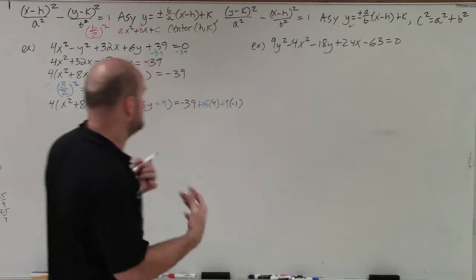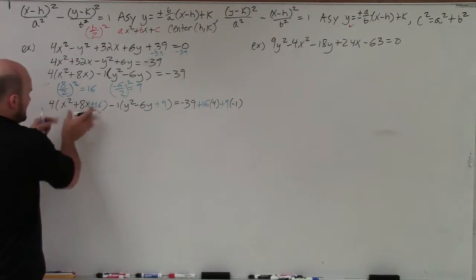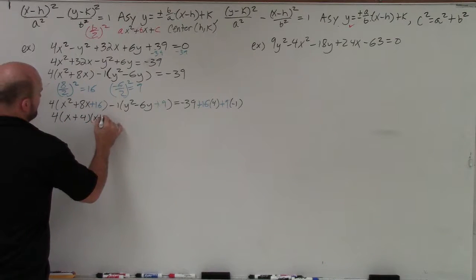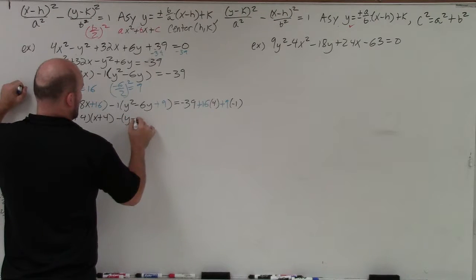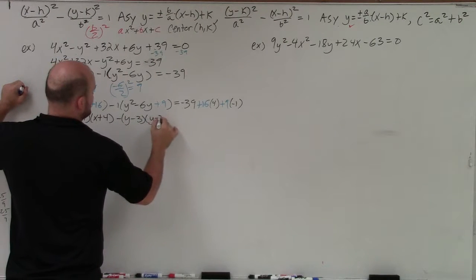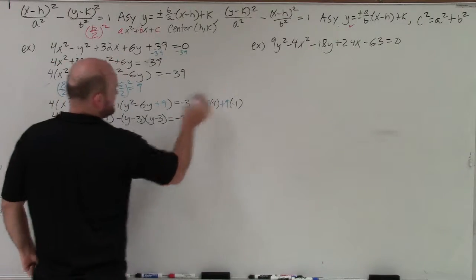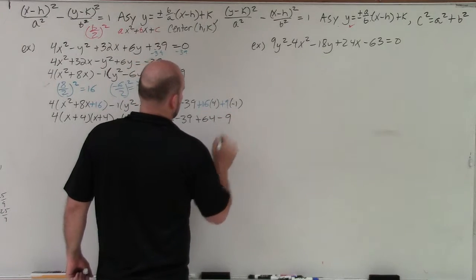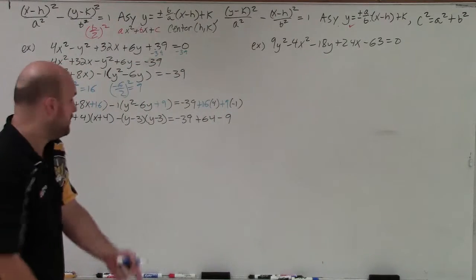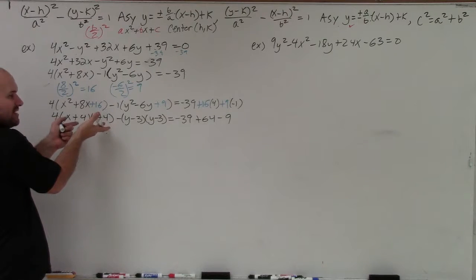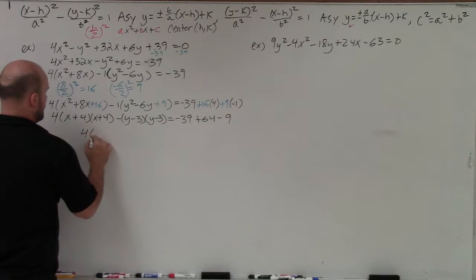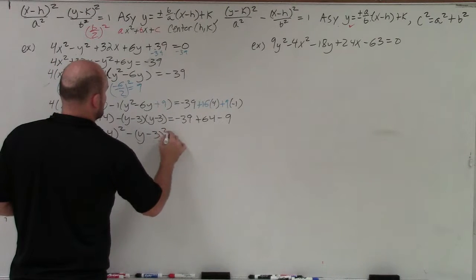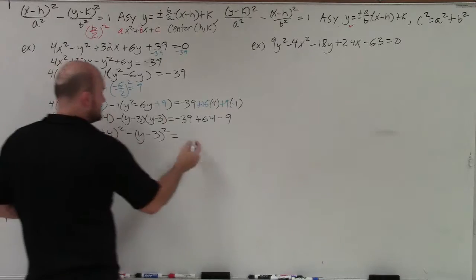The main important thing is getting these binomial squares. I'll factor: 4(x + 4)(x + 4) − (y − 3)(y − 3) equals negative 39. With 16 × 4 = 64 minus 9, I can write this as a binomial squared: 4(x + 4)² − (y − 3)² = 16.